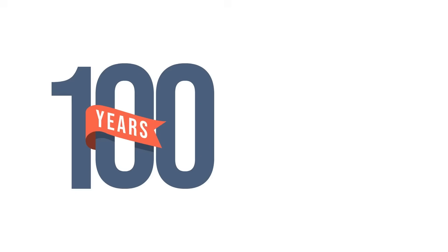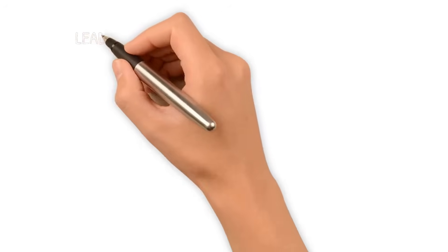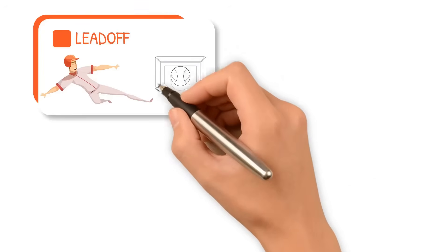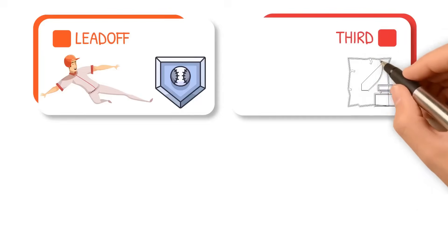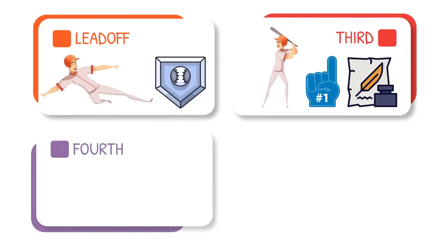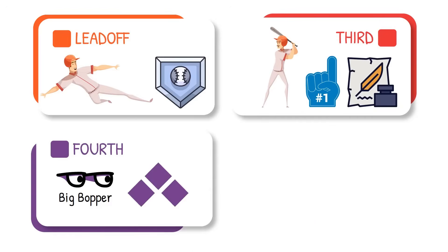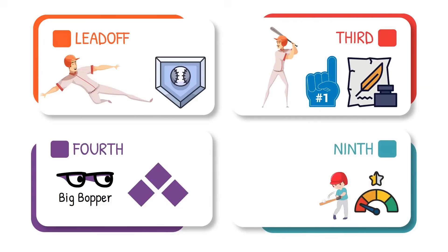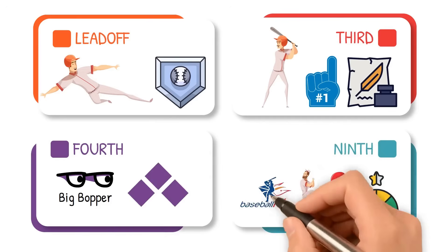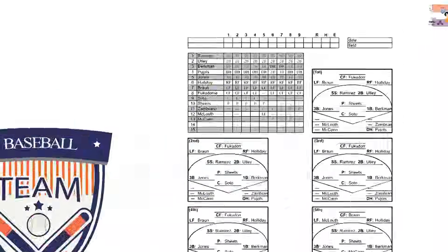For over 100 years, baseball teams have followed the same recipe when building a lineup. The leadoff hitter is the fastest player who can wreak havoc on the base paths. The three-hole hitter has historically been thought to be your best hitter. Fourth is going to be the big bopper who's looking to come up with the bases loaded, and the ninth is going to be your worst hitter, or the pitcher back when they used to hit in the NL. But what if I told you we've been doing it wrong this whole time?